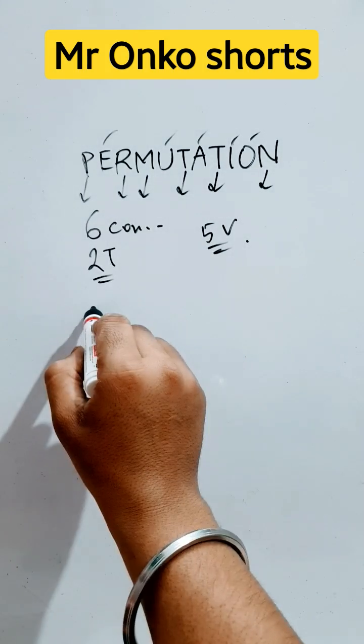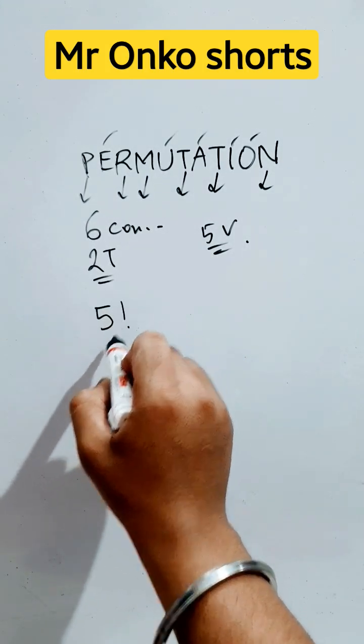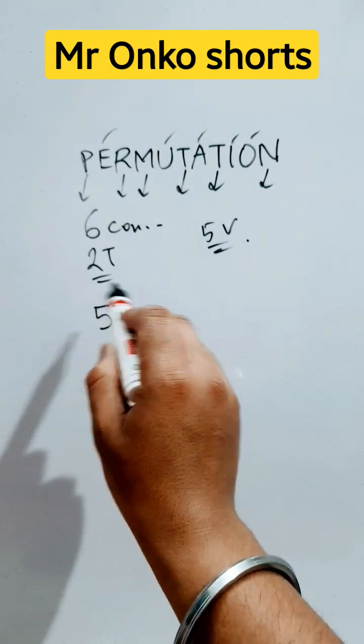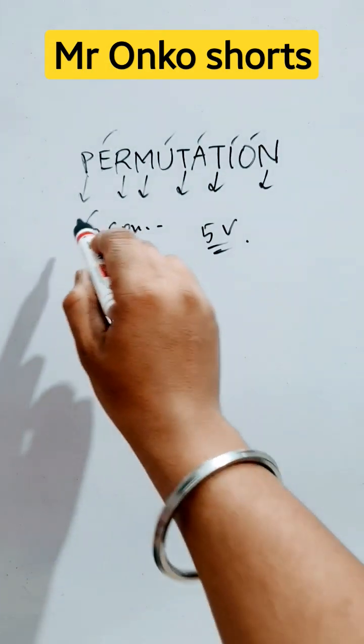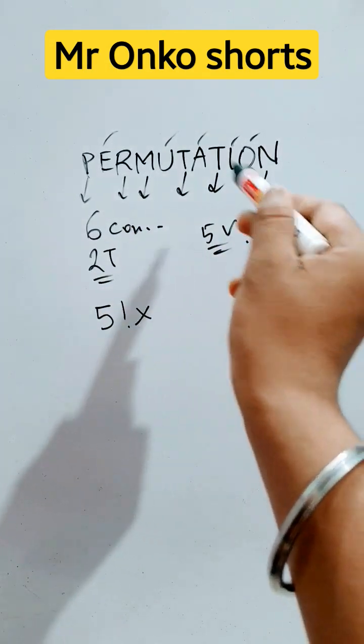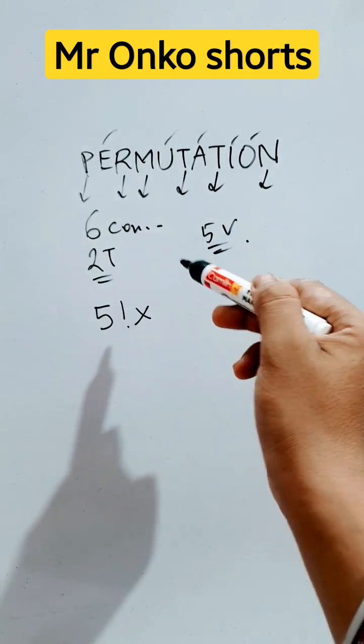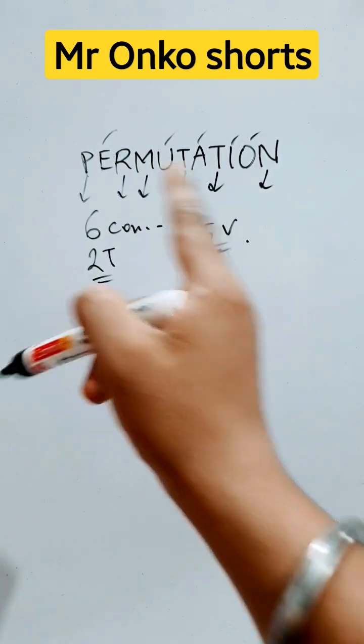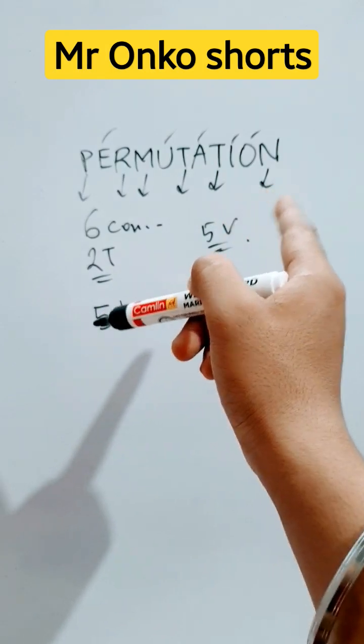So five vowels will arrange together within itself, that is in 5 factorial ways. Six consonants are there, and the vowels in a group always remain as a single unit. That is six consonants plus one group of vowels.